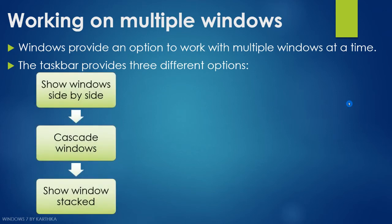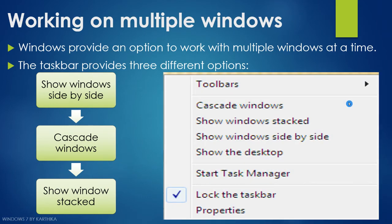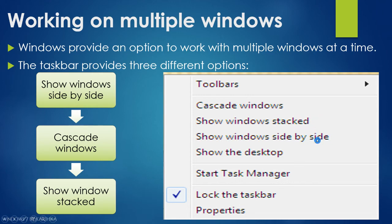In that pop-up list you can find Cascade Windows, Show Windows Stacked, and Show Windows Side by Side. Cascade Windows shows all opened windows one behind another. Show Windows Stacked shows all opened windows one after another vertically. Show Windows Side by Side shows all opened windows horizontally. That is the main difference — Side by Side is horizontal, Stacked is vertical. This is how you can work on multiple windows at a time in Windows 7.